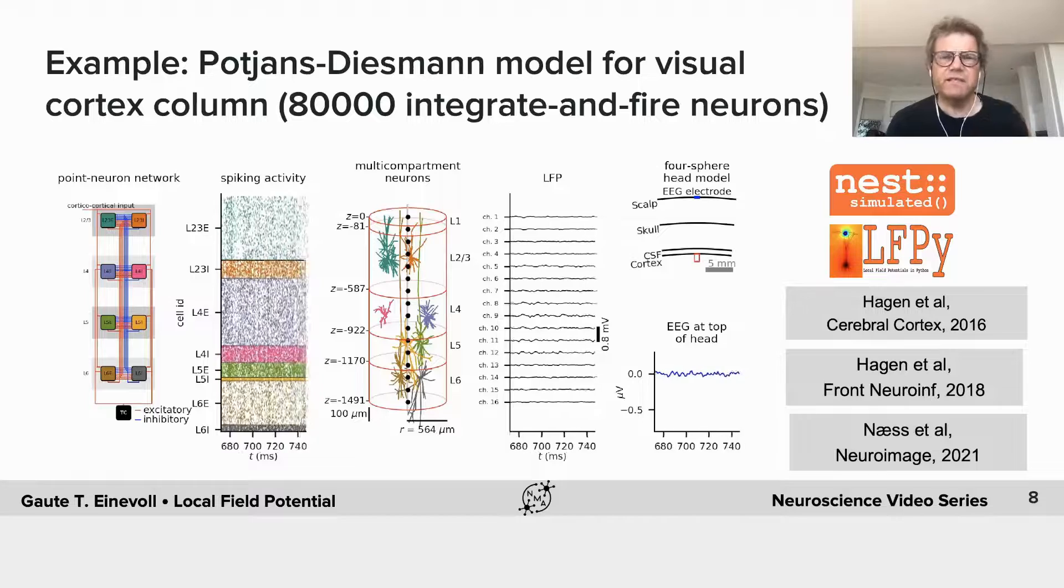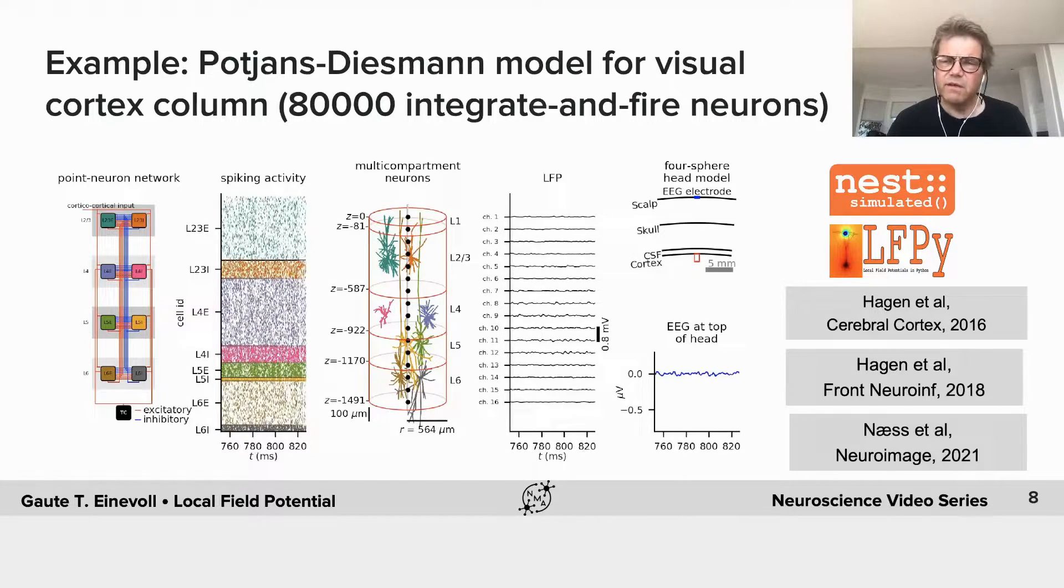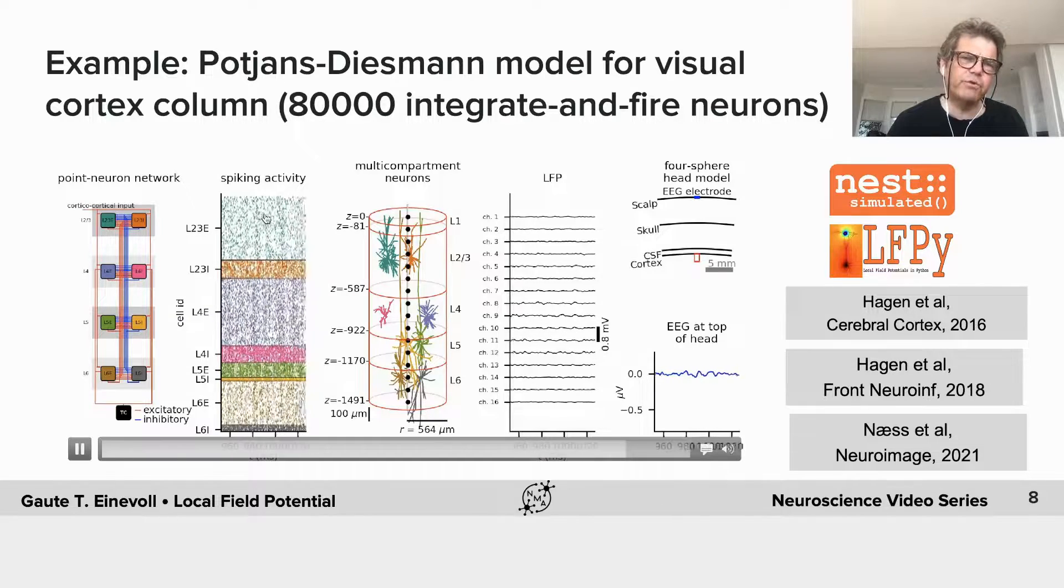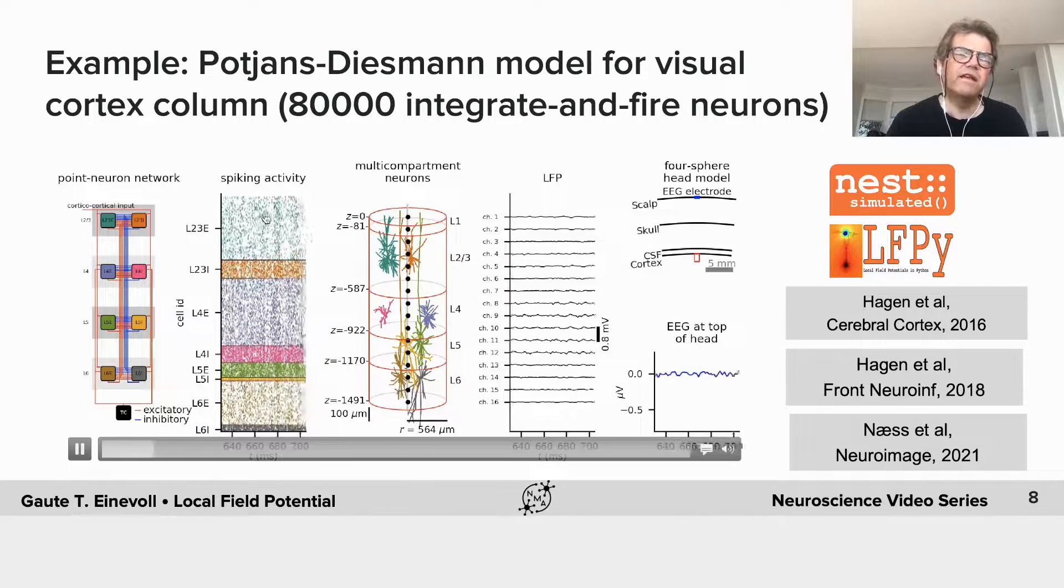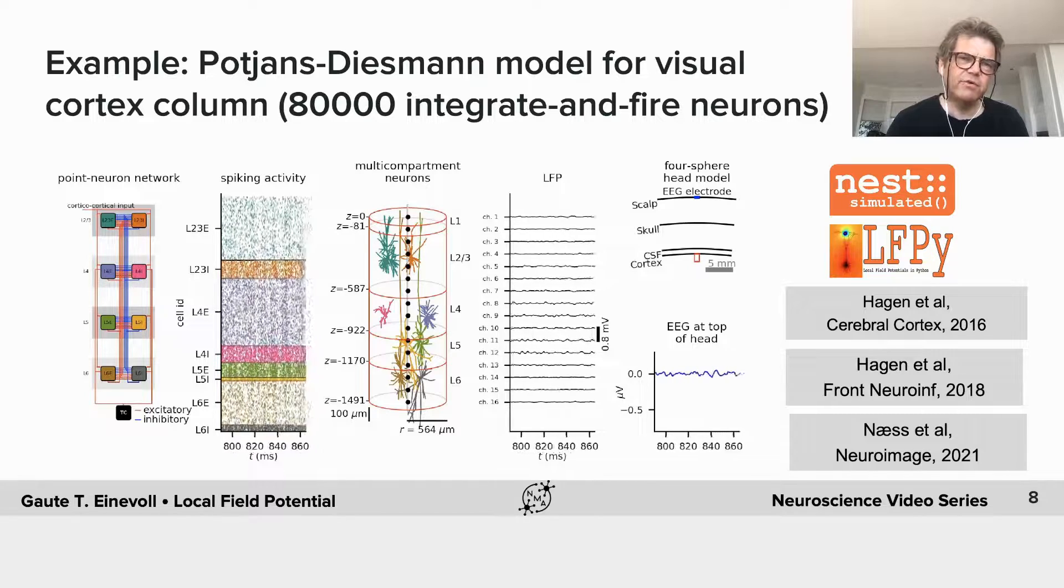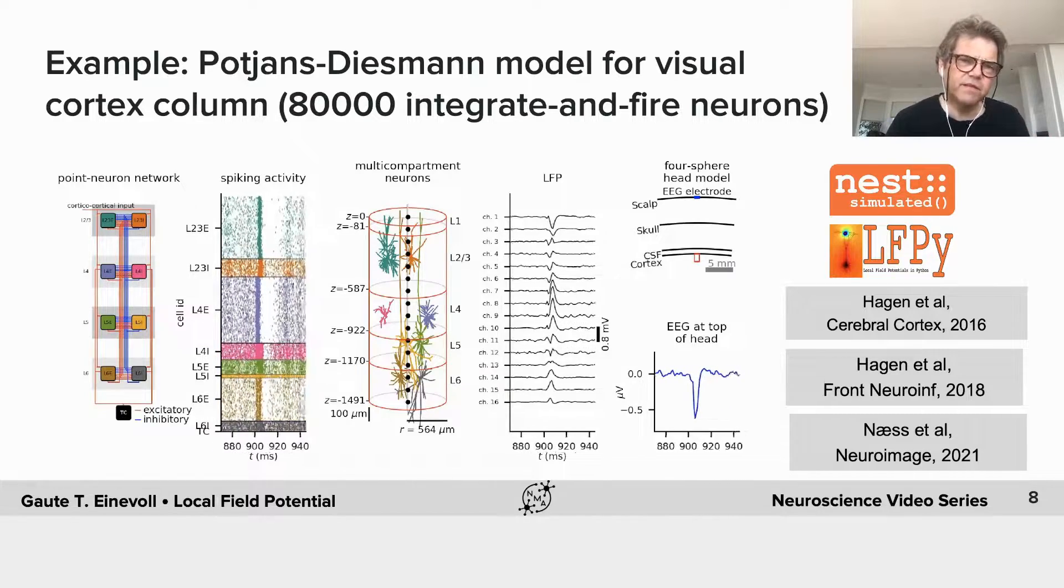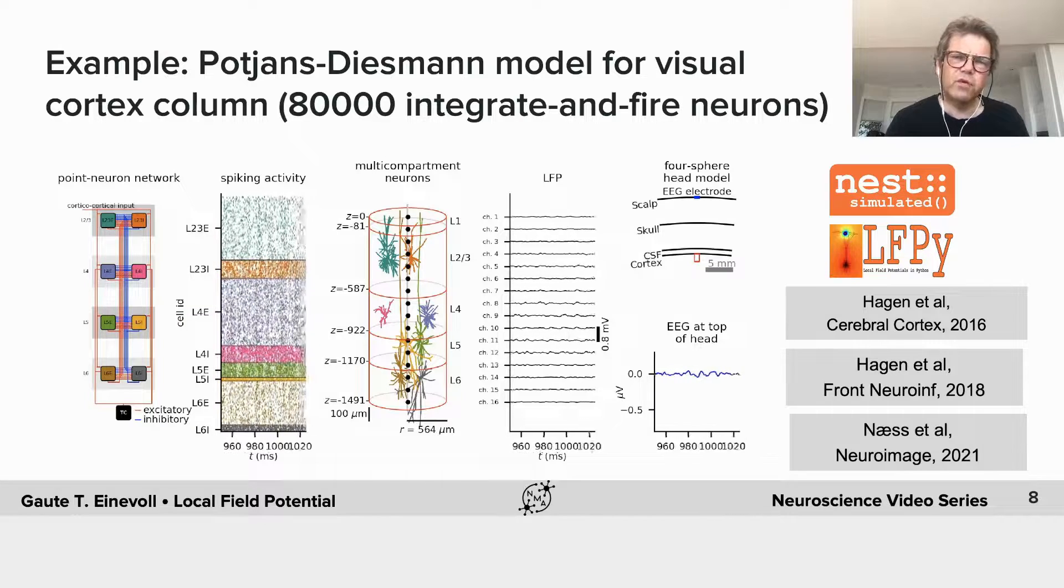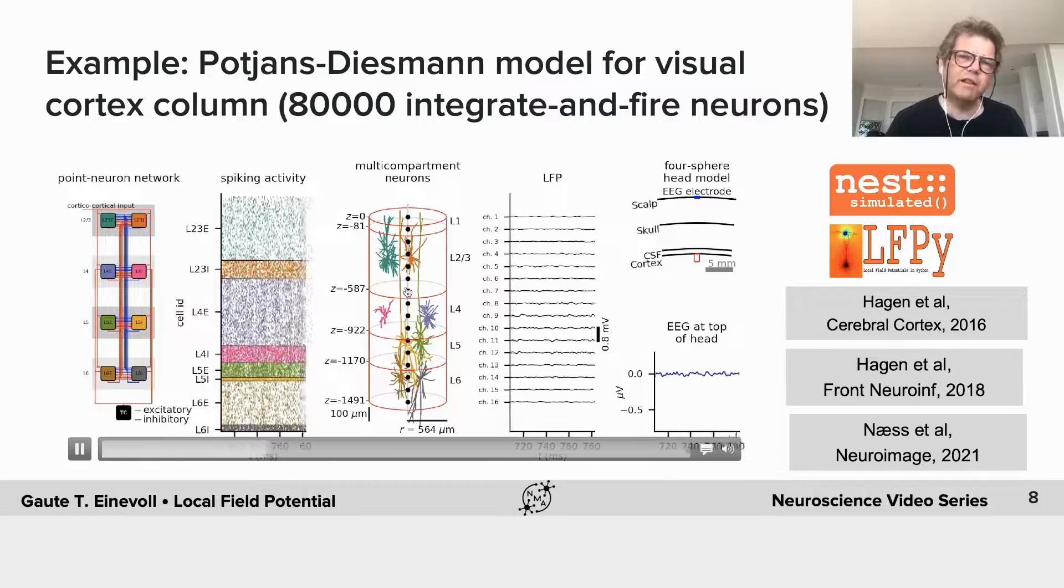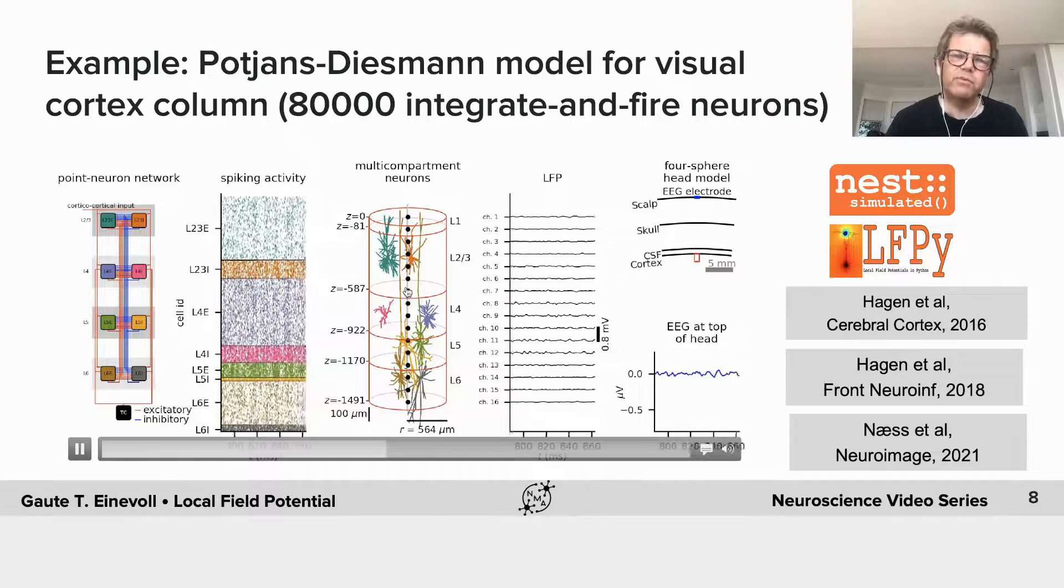Where we first compute the spiking activity using NEST with point neurons. And then we store all the spikes and use them in combination with multi-compartmental neurons to compute the LFP in a second step.